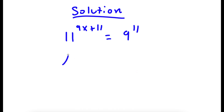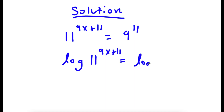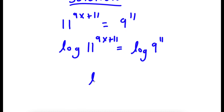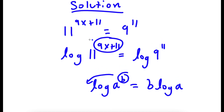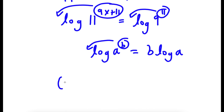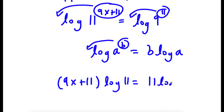Now if I take the log on both sides, I have log of 11 to the power of 9x plus 11 is equal to log of 9 to the power of 11. If I have something in the form log a to the power of b, I move b to the front, so it equals b times log a. So I can move 9x plus 11 to the front and move 11 to the front, giving me 9x plus 11 times log 11 is equal to 11 times log 9.